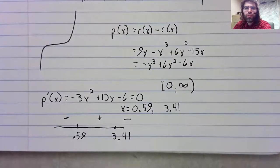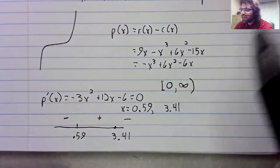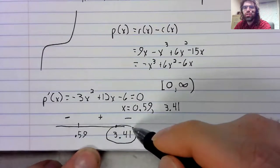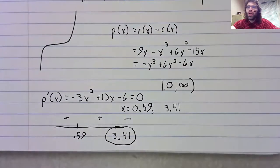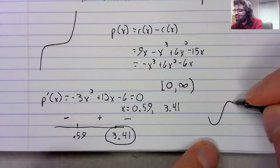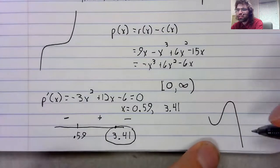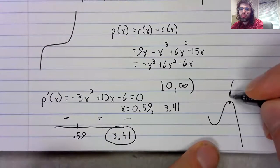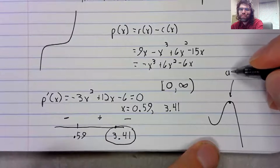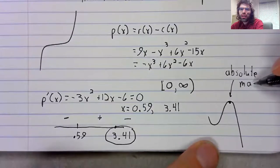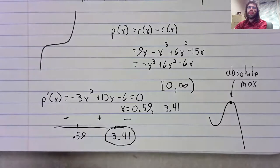So the first derivative test tells us that this is a local maximum. And because we know what the graph of this thing looks like, we know this local maximum is also an absolute maximum.